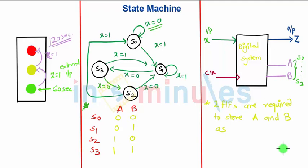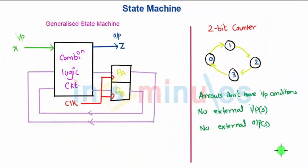These two flip-flops store the values for A and B. State S0 corresponds to A equals 0 and B equals 0. Here is the diagram for a generalized state machine showing how it actually looks.